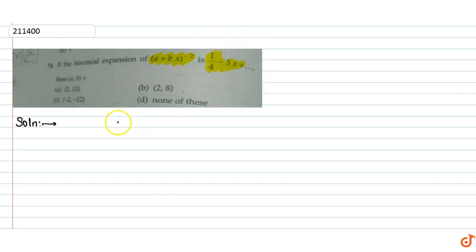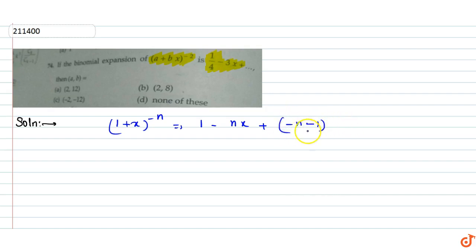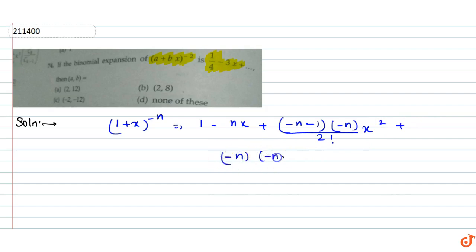First of all, if we look at the general formula: (1 + x)^(-n) expansion is equal to 1 minus nx plus [(-n)(-n-1)/2!] x² plus [(-n)(-n-1)(-n-2)/3!] x³ up to here.